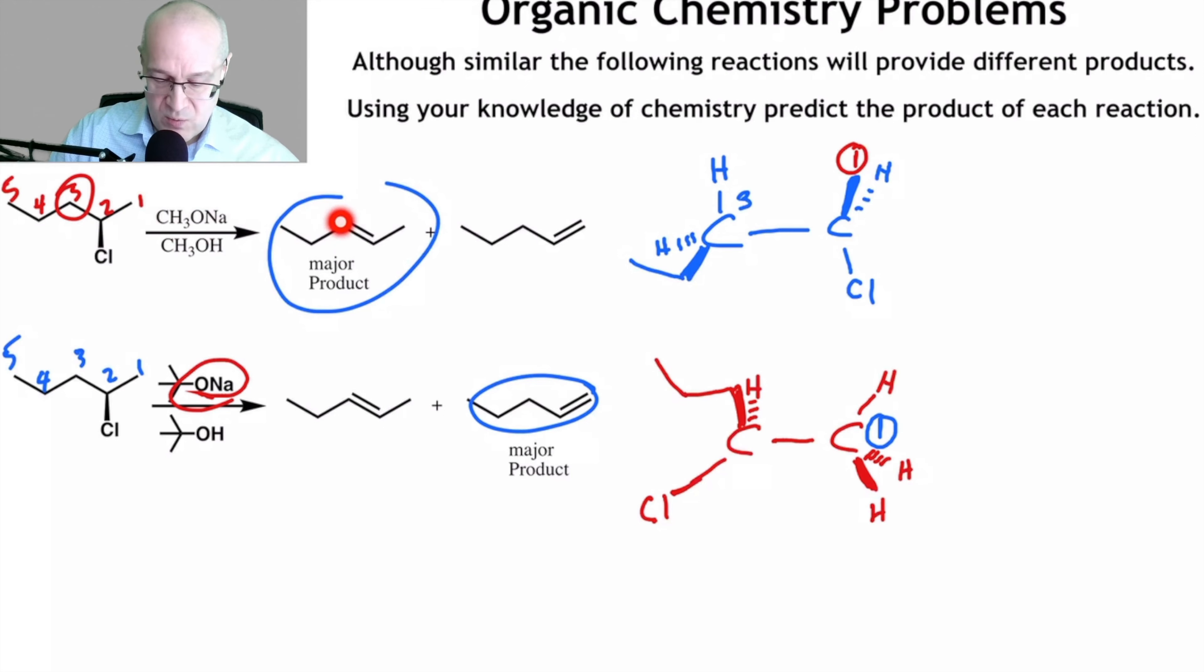Now the smaller base wants to deprotonate at carbon-3 because it gives you the more thermodynamically stable product. So the transition state is going to be lower in energy. So it's going to prefer to attack here. So it's going to happen more often. The big base can't get in here as often, so it deprotonates here preferentially. This is also called the kinetic product. It's the product that forms because it's the fastest to form, not necessarily the most stable.